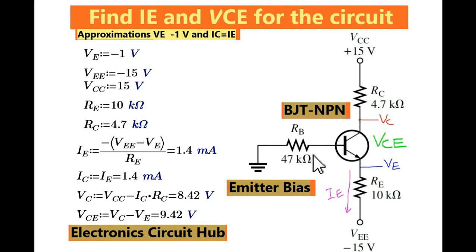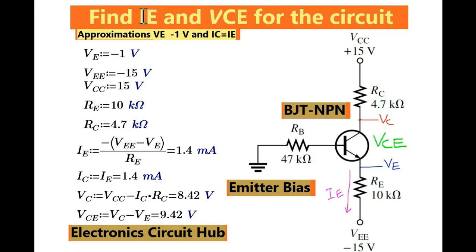Let us understand how we will solve this numerical. The question here is to find out the value of IE and VCE for the circuit given below. So you have got this circuit, let us say in your university exam, and you are asked to find out the value of IE and VCE. Once you see this circuit, you have to analyze it and understand what is the biasing and configuration of the circuit.